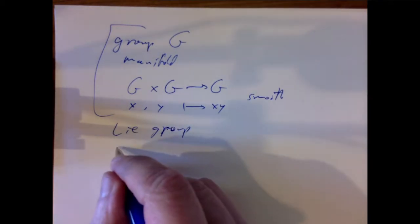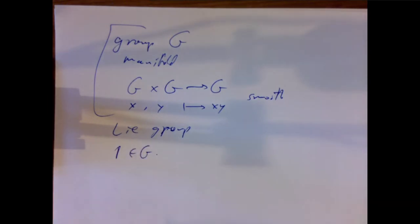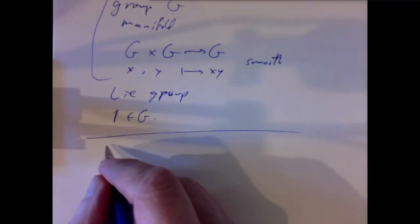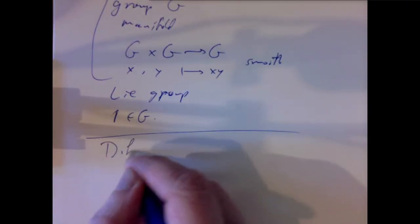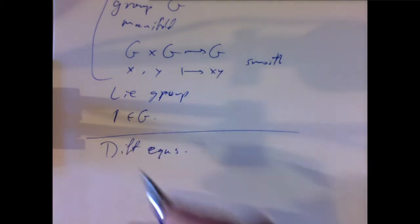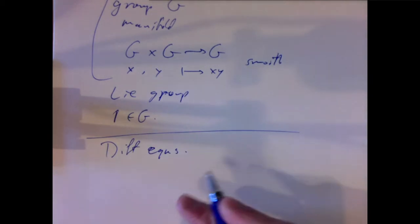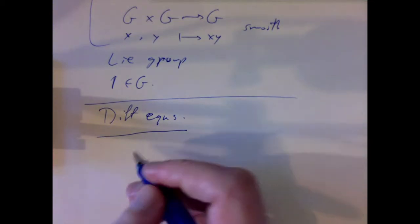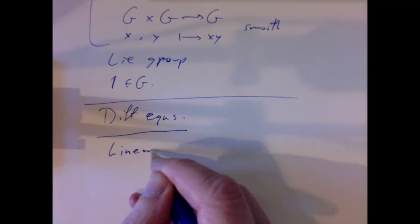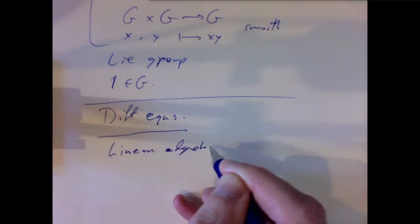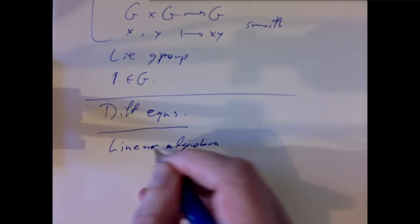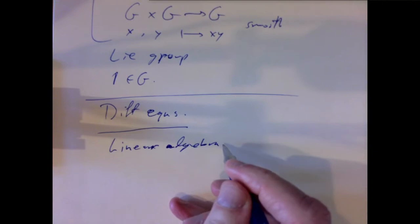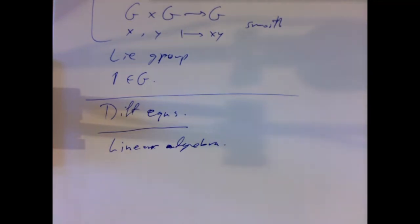I'll always denote the identity element as one. Historically, Lie thought about Lie groups as symmetry groups of differential equations, and it is true that typically, if you have a differential equation arising in science or engineering, its symmetries form a Lie group. Nevertheless, to construct simple examples and to understand how Lie groups work, we usually start not from differential equations but from linear algebra.